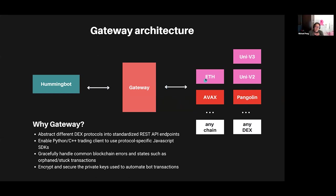Initially we built Ethereum and Uniswap V2, and we just added Avalanche and Pangolin connectors, which serve as a good template for other EVM-compatible chain connectors. Overall, the idea is a framework that supports any chain and any DEX on those chains. This is still a work in progress, but we encourage the community to start developing on it — there are already community members building on Gateway V2, with Telegram groups for chains like Binance Smart Chain, Polygon, Solana, and Harmony.